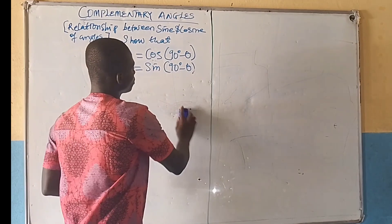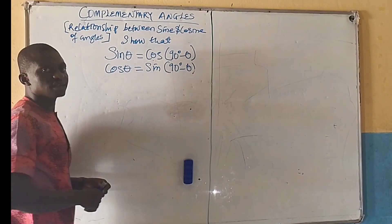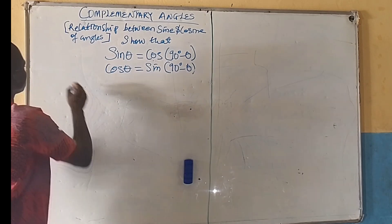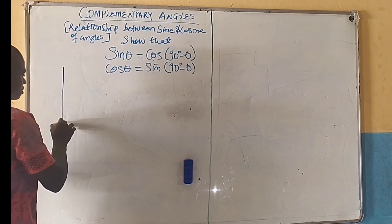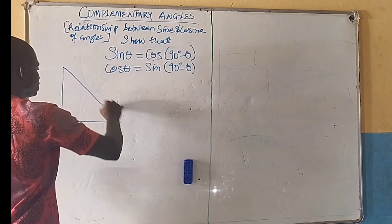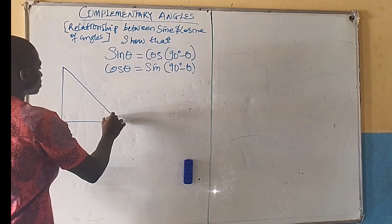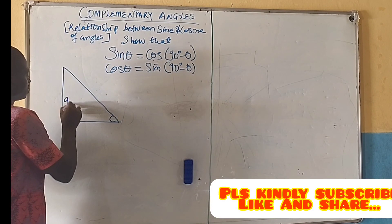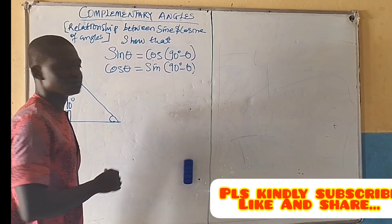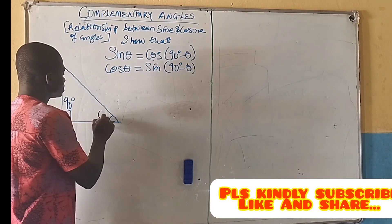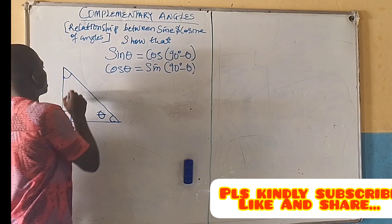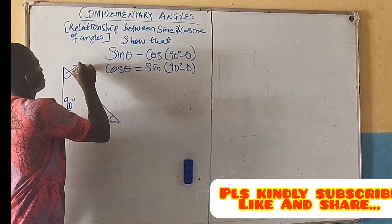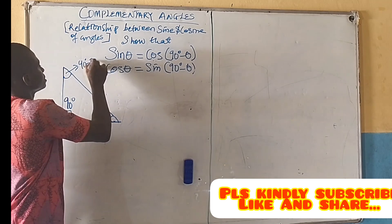For us to do this, we are going to use a right angle triangle. Here is 90 degrees, here is theta, and here will be 90 degrees minus theta.